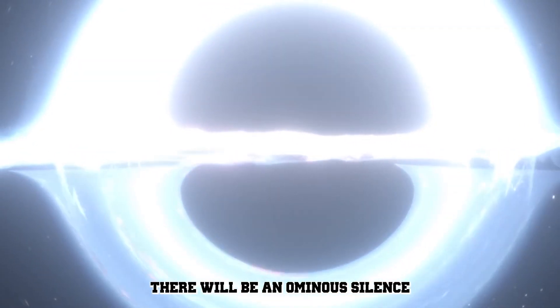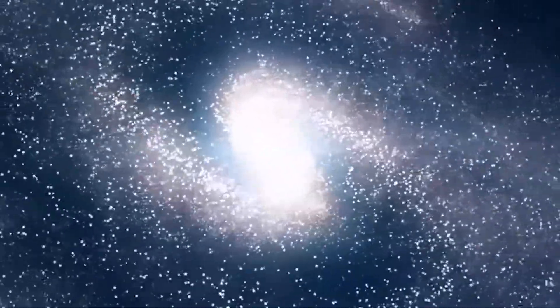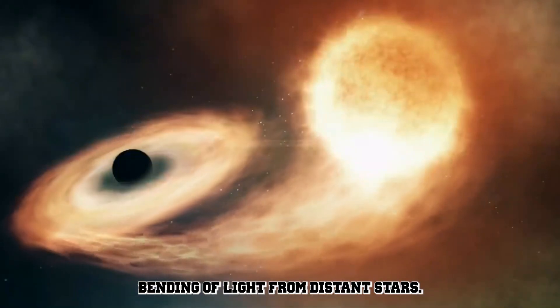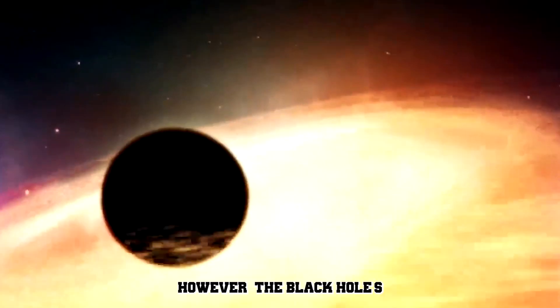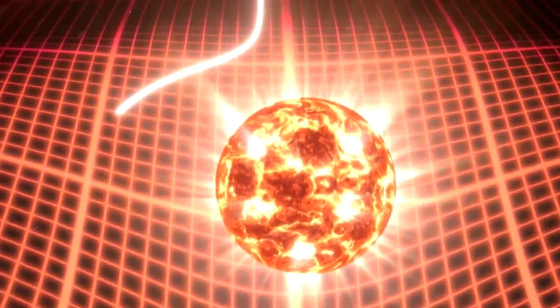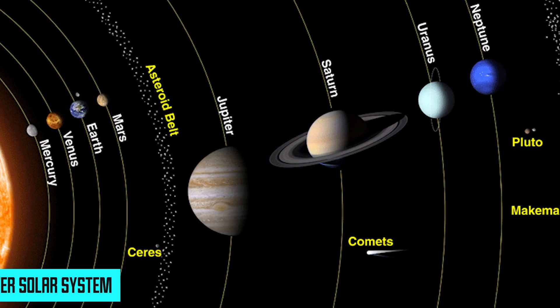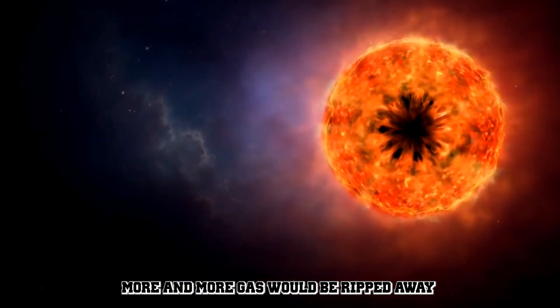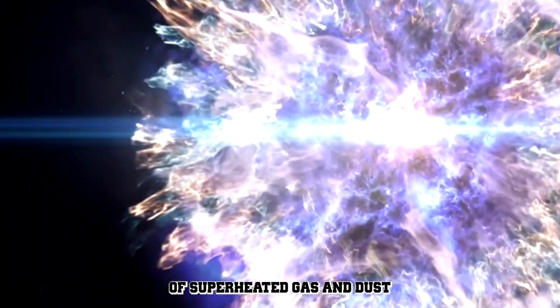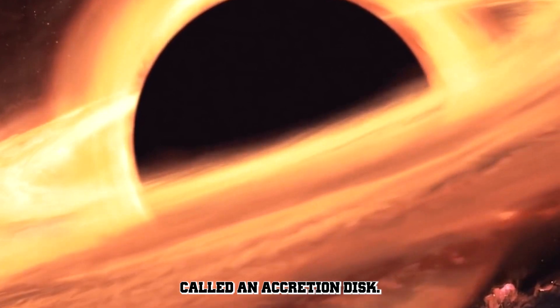So, what do we observe? There will be an ominous silence, with the black hole staying invisible to us, except for the faint bending of light from distant stars. However, the black hole's immense gravitational force would begin to target the gas giants orbiting in the outer solar system. With each pass, more and more gas would be ripped away, making a whirling vortex of superheated gas and dust called an accretion disk.